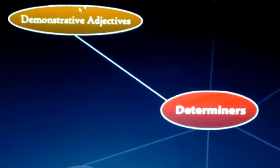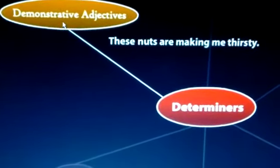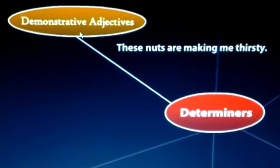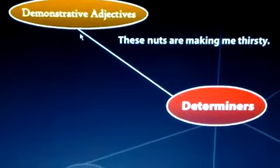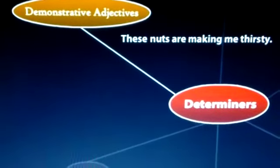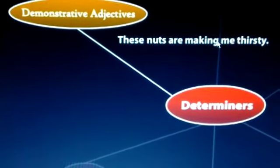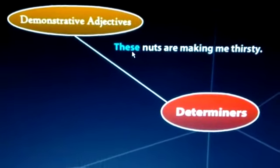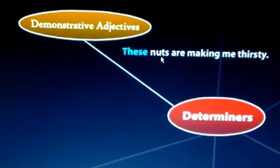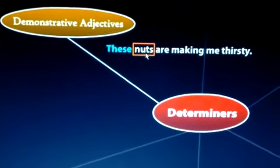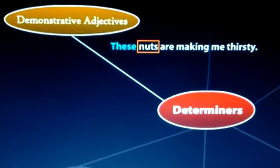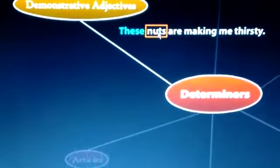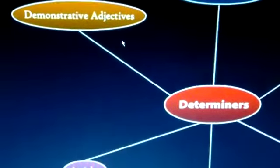Then in demonstrative adjective, we have to demonstrate something. Kaun sa wala? These, those, that. In this example is given: these nuts are making me thirsty. Which nuts? These nuts. Nuts is a thing. As I have told you that noun is the name of person, place or thing. This is a thing. How many nuts? Which nuts? These nuts.